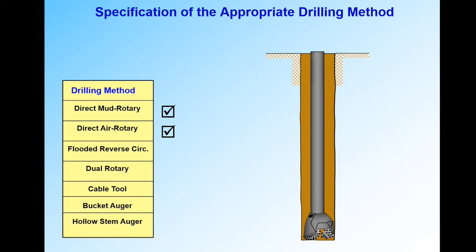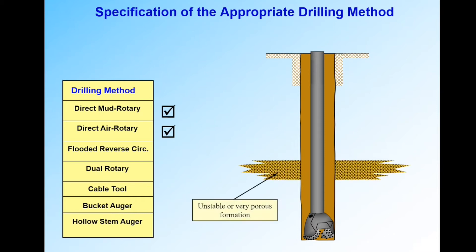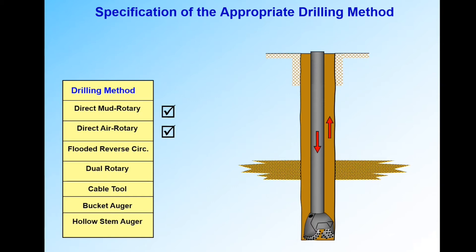With mud rotary, we use the drilling fluid to circulate cuttings out and advance the borehole. But what if we have a porous formation — a fractured rock aquifer, or an alluvial gravel, cobble, or porous sand zone? This will be a trouble zone because it's unstable and will allow fluids to seep out. As we circulate down the drill pipe and up the annulus with direct circulation, some fluid may not reach land surface — it seeps into the porous zone. That's called lost circulation. We lose hydraulic head and borehole stability.